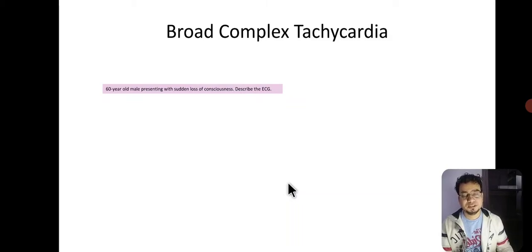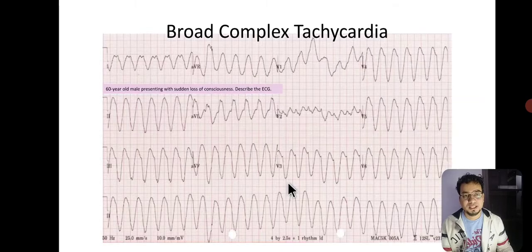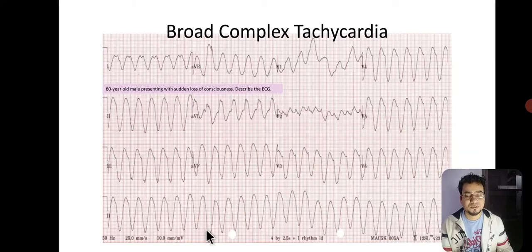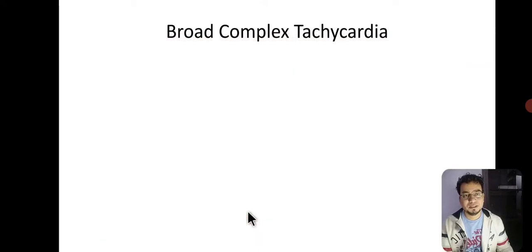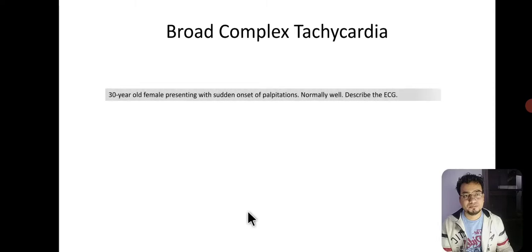Now we will look at a broad complex tachycardia ECG of a 60-year-old male presenting with sudden loss of consciousness. Look at the QRS duration, which is more than five small boxes — more than 200 milliseconds or 0.2 second. Therefore, this is mostly ventricular tachycardia.